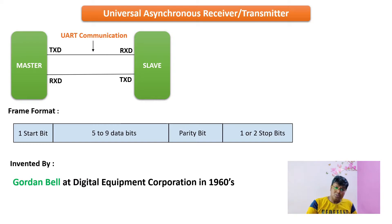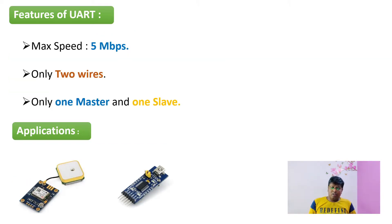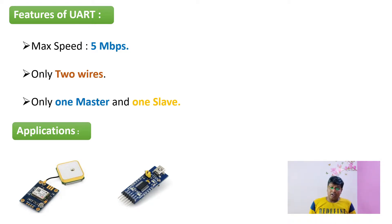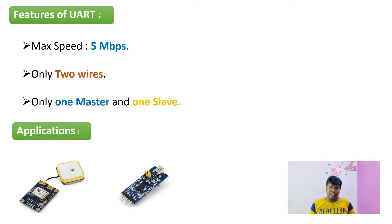The features of UART include a maximum speed of 5 megabits per second. You only need two wires to communicate between one master and one slave, making it simple. Applications of UART include GPS modules, temperature sensors, color sensors, pressure sensors, and many more, so it finds plenty of applications in embedded systems.